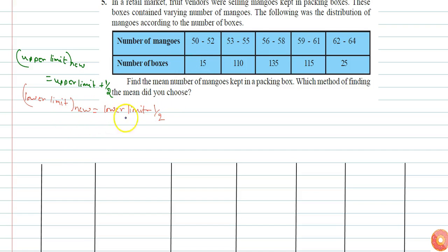So 50 minus one by two. I can write the first column is for number of mangoes in interval form. So I can write it as lower limit will be now lower limit minus one by two, so it will be 49.5 to 52.5, and 52.5 to 55.5.